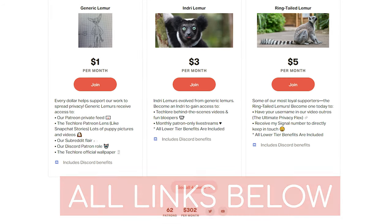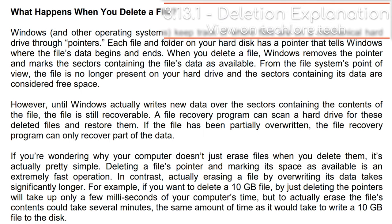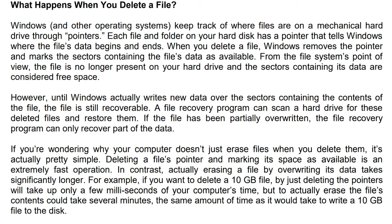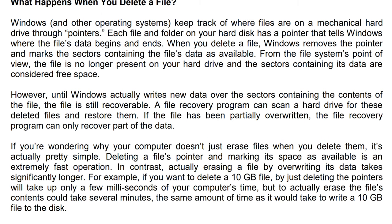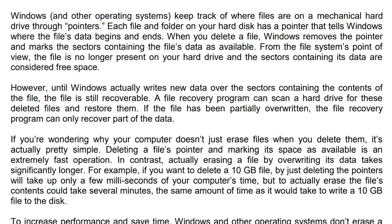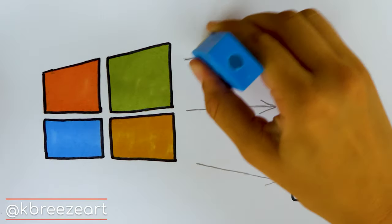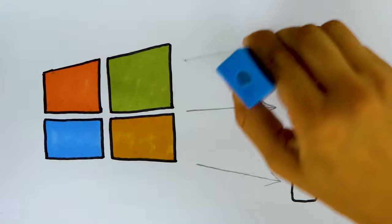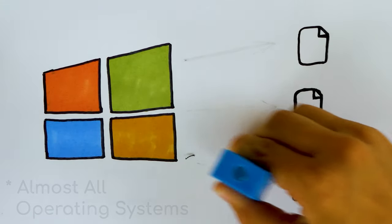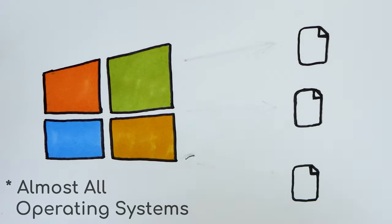First, how come emptying the recycle or trash bin doesn't work? I'm going to loosely quote this website since they explain it perfectly. On traditional spinning hard drives, Windows keeps track of where files are on the drive through pointers. Each file and folder on your hard disk has a pointer that tells Windows where the file's data begins and ends in order to quickly store and locate it. When you delete a file, Windows removes the pointer and marks the sectors containing the file's data as available — so all it's doing is removing the connection from Windows to the data being stored on the disk.